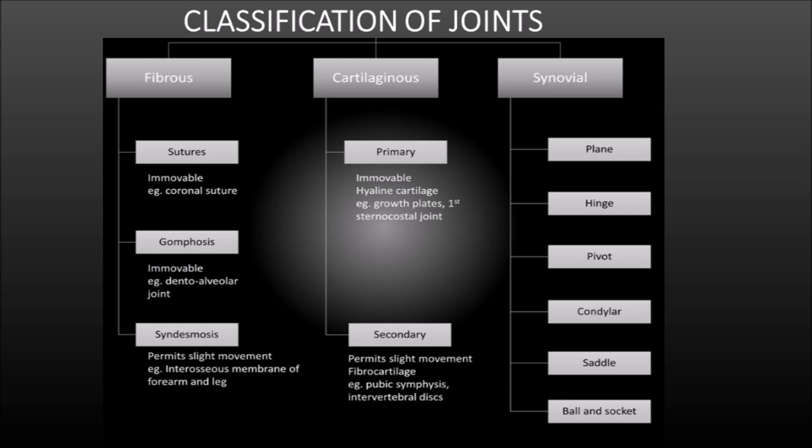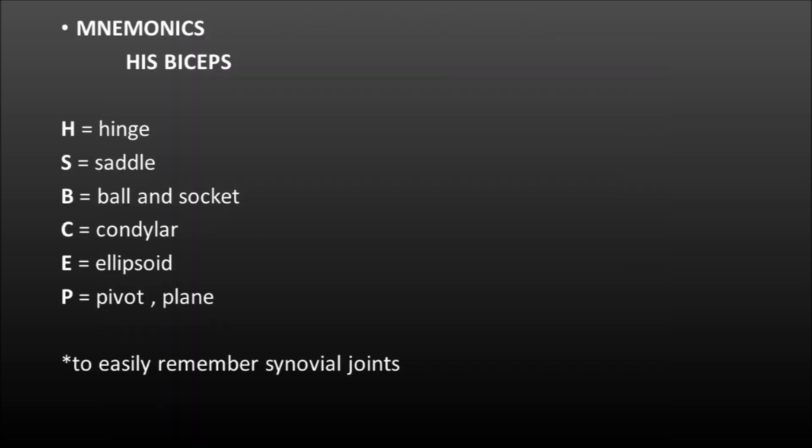Synovial joint is further bifurcated into seven: plane joint, hinge joint, pivot joint (also called trochoid joint), condylar joint, saddle joint (also called sellar joint), ellipsoid joint, and ball and socket joint. Remember the mnemonic 'His Biceps': H for hinge, S for saddle, B for ball and socket, C for condylar, E for ellipsoid, P for pivot, and plane joint.